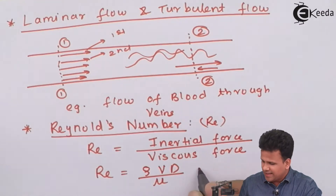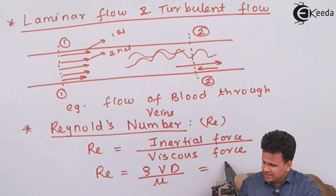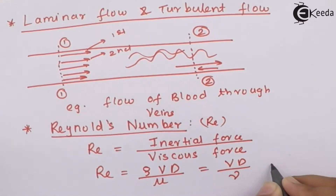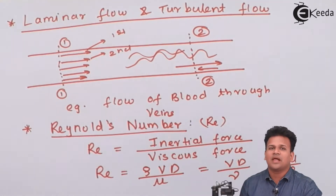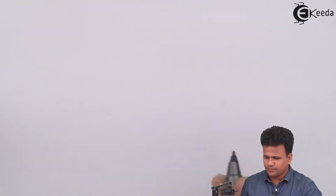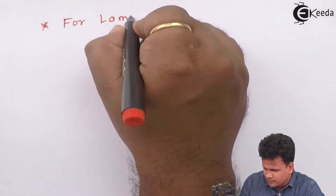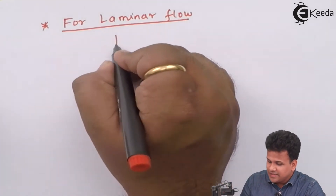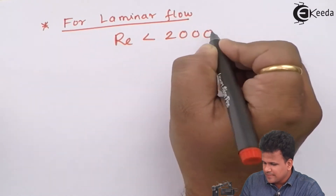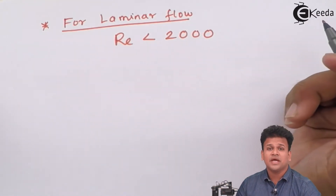This can also be written in terms of kinematic viscosity as Re equals V times D divided by nu, where nu (kinematic viscosity) equals mu divided by rho — that is, kinematic viscosity is the ratio of dynamic viscosity to density. For laminar flow, the value of Reynolds number is less than 2000. Since Reynolds number is a dimensionless quantity, it has no unit.